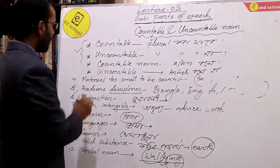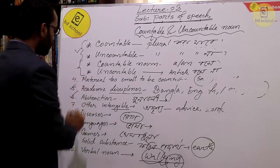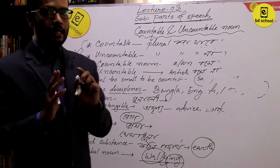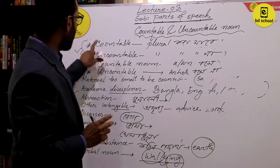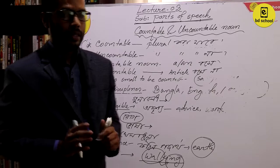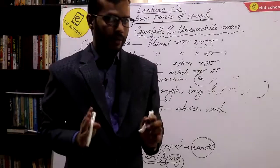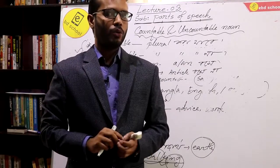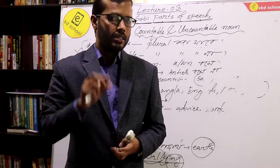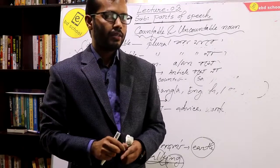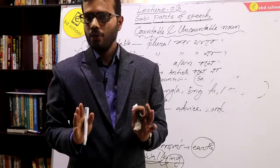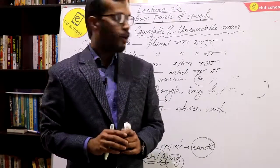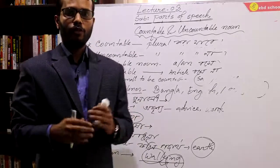So now we have countable and uncountable nouns. The key point is: countable nouns have both singular and plural forms, while uncountable nouns do not take a plural form. Thus, the plural form is the main distinguishing feature between countable and uncountable nouns. That is what we have learned.